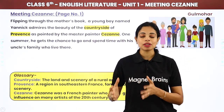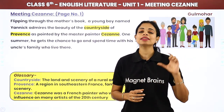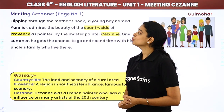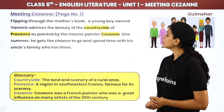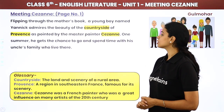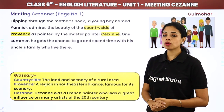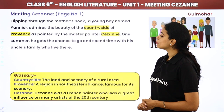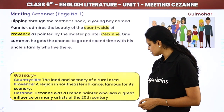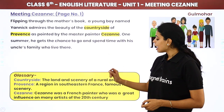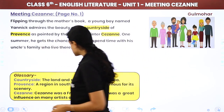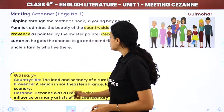Before we start the real story, there is a little introduction given to us. Flipping through his mother's book, a young boy named Yannick admires the beauty of the countryside of Provence as painted by the master painter Cezanne.